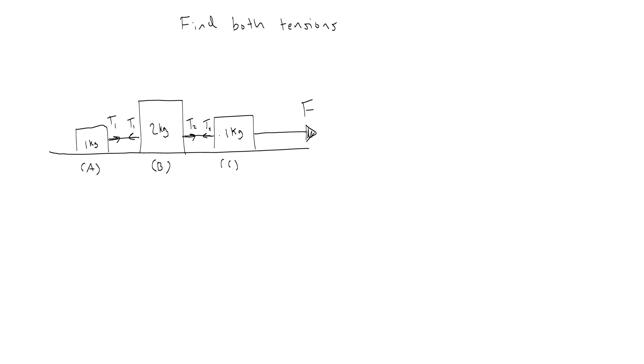So when I draw free body diagrams for A, B, and C, each of them is going to have a weight and a normal force. I'll call that MAG, MBG. That should be a little bit bigger, but whatever. MCG, and then the normal force. Call it NC, NB, and NA.